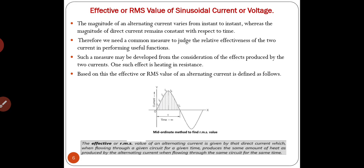The effective or RMS value of an alternating current is that direct current which, when flowing through a given circuit for a given time, produces the same amount of heat as produced by the alternating current when flowing through the same circuit for the same time. If we apply direct current to a coil, the same amount of heat is produced as the alternating current for the same duration — that is the RMS value.